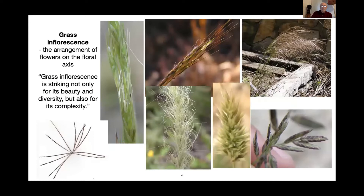Then we talk about the inflorescence — this is the whole of the flowering part of the grass. There are different inflorescences, and you can only see these when grasses are in flower; at other times we have to identify them by other means. A lot of people think grasses are not particularly interesting, but I find grass inflorescences striking, not only for their beauty and diversity, but also for their complexity. I hope you start to develop that same enthusiasm.